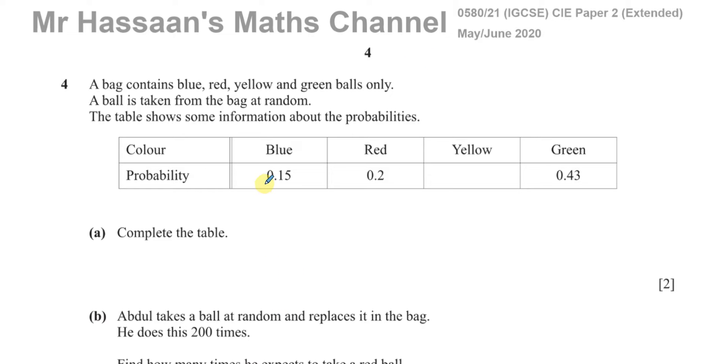Complete the table. What we should know is that the sum of all the probabilities must always equal one. So simply, you need to take all of these values, add them together, and subtract them from one.